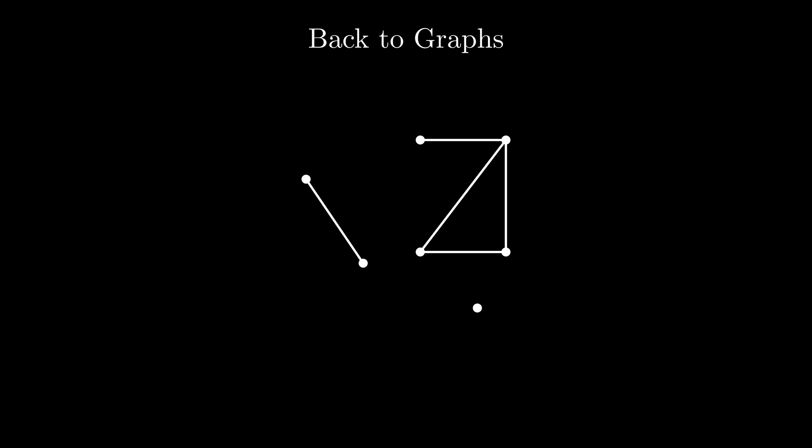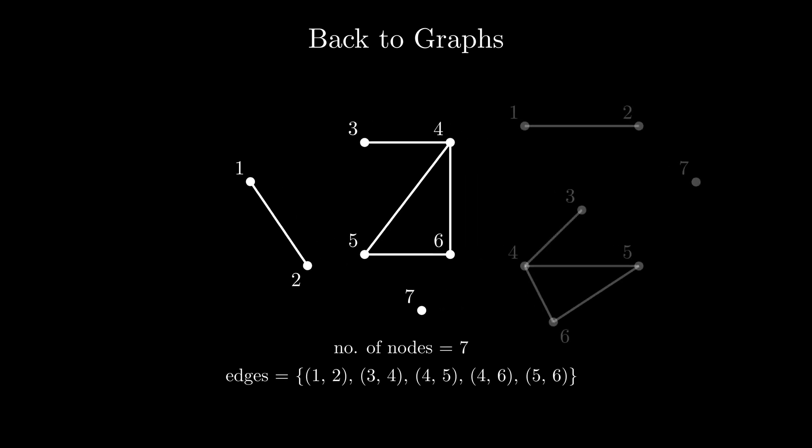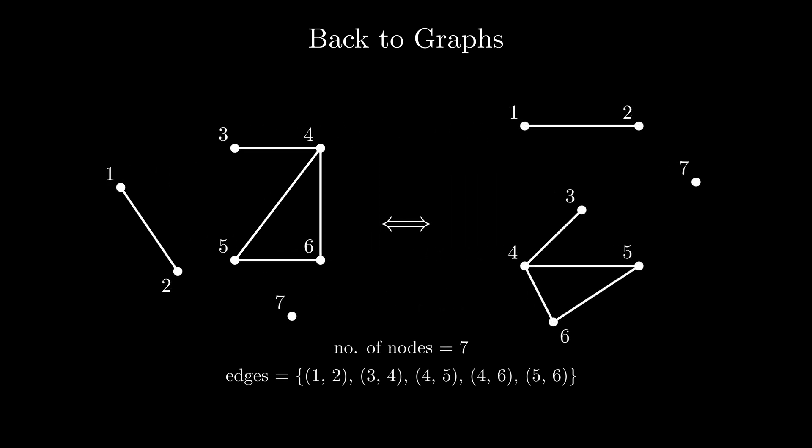A graph is uniquely determined by specifying the number of nodes and the set of edges. For this graph, we have 7 nodes and the edges 1, 2, 3, 4, 4, 5, 5, 6 and 4, 6. Note that the shape of the graph doesn't actually matter. So these two graphs are the same.